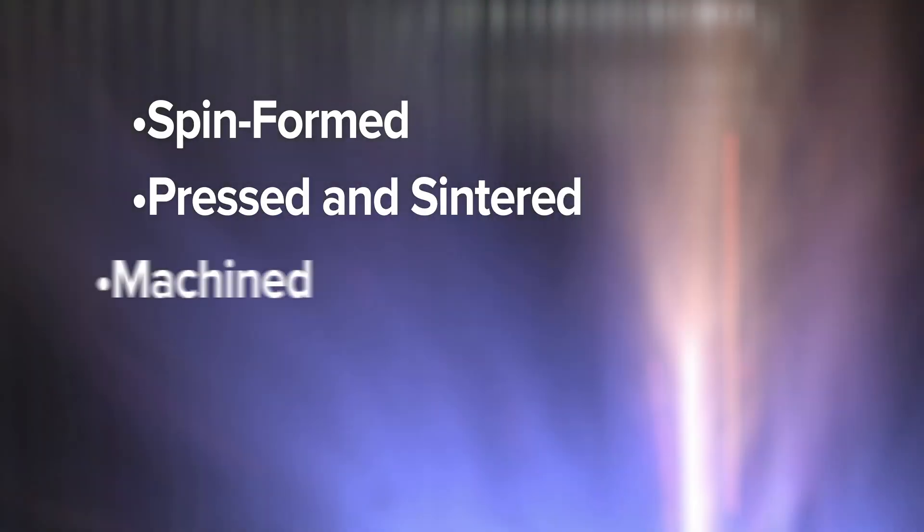Crucibles play a critical role in sapphire growth furnaces, and Elmet manufactures a full line of sapphire growth crucibles, including spin-formed, pressed and sintered, machined, and folded designs.